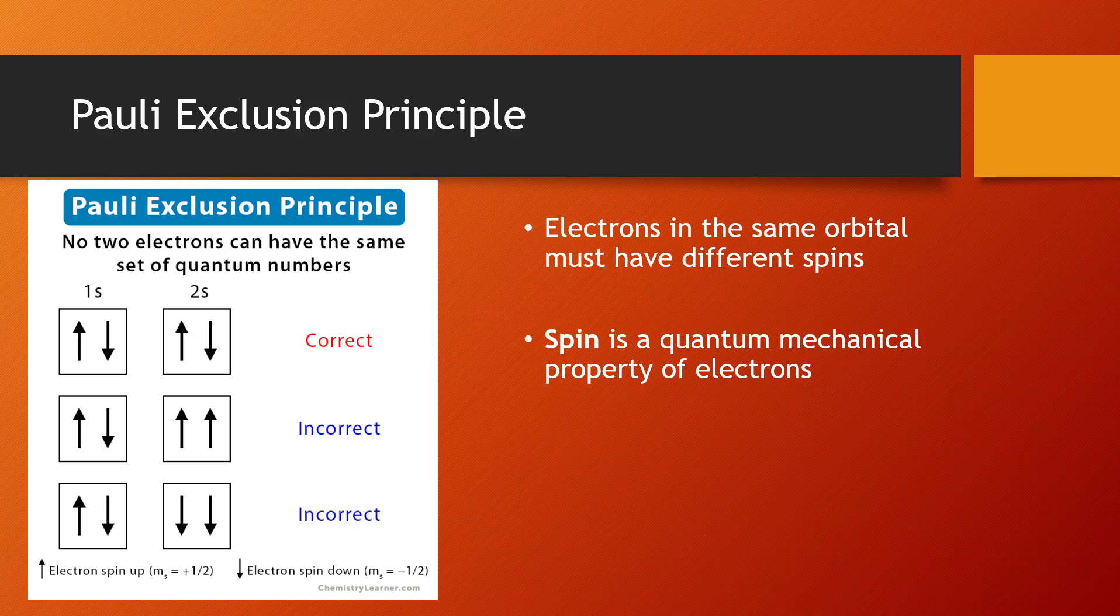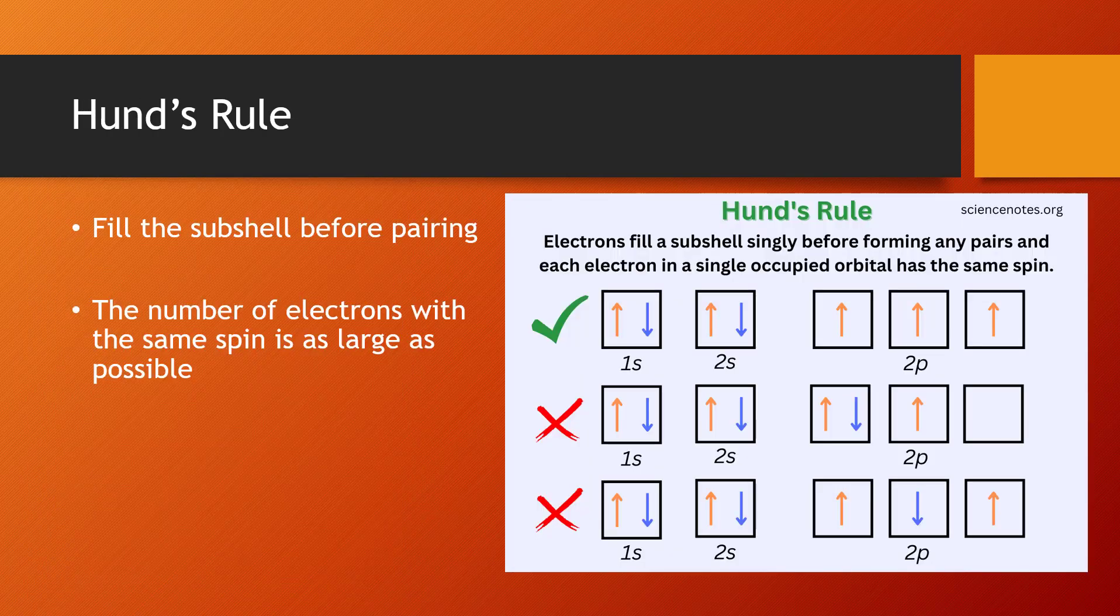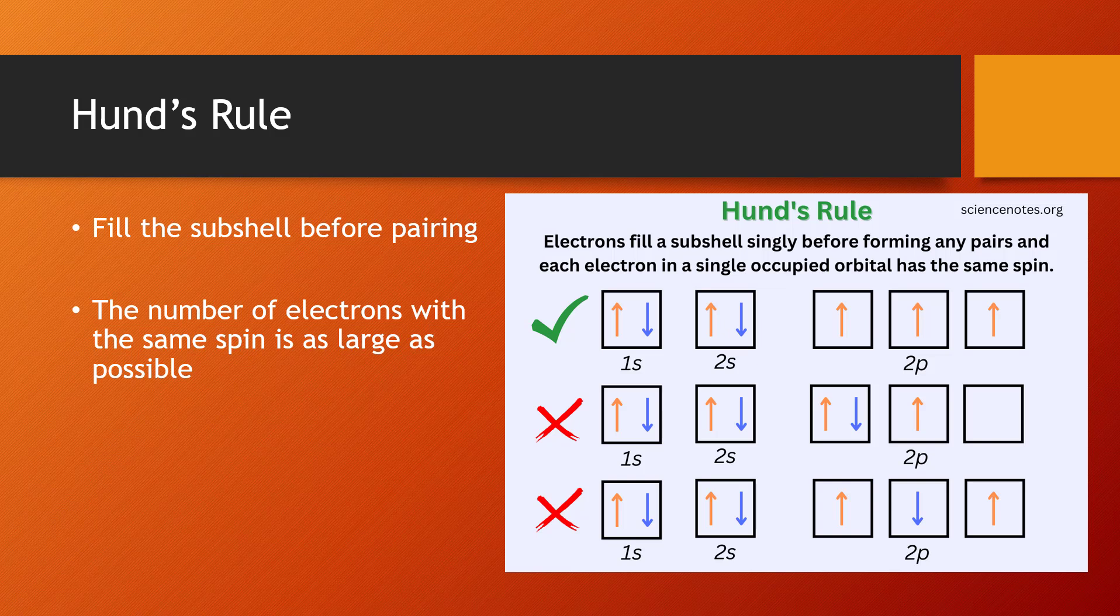But what if your energy level has multiple sub orbitals in it? That's when you're going to look at Hund's rule. You're going to fill each subshell before pairing. So 2p has three different orbitals, so you put one electron in each orbital before you start pairing them up.